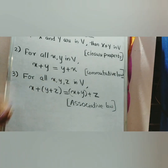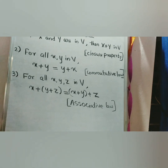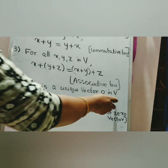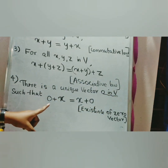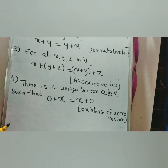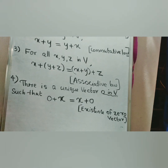The third property is the associative law. Fourth property: there is a unique vector 0 in V such that 0 plus x equals x plus 0 equals x. This is known as the existence of the zero vector.